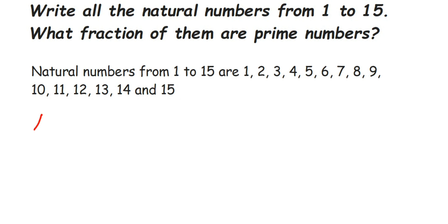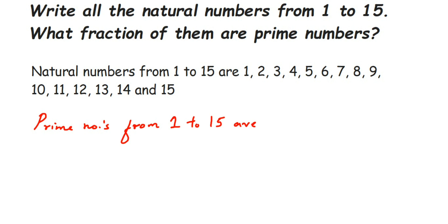The prime numbers from 1 to 15 — so 1 is neither prime nor composite, so we're not going to consider 1. We start with 2, which is a prime number. Then 3 is also a prime number. Prime numbers are numbers which don't appear in any multiplication table except 1 and the number itself. Like 3 goes only in the 1 table and the 3 table itself.